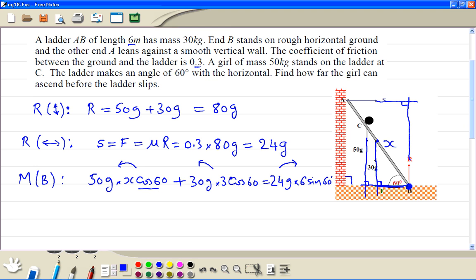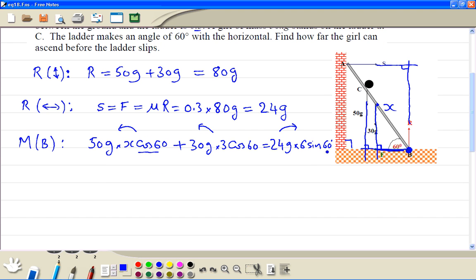So cosine 60 is half. Half times 50 is 25gX. So that's half times 3. 1.5 times 3 is 45g. This equals 24 times 9.8 times 6 sine 60.